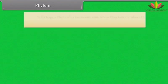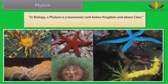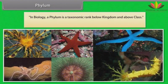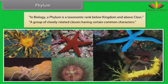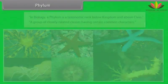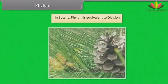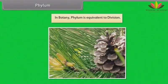Phylum: In biology, a phylum is a taxonomic rank below kingdom and above class. It is a group of closely related classes having certain common characters. In botany, phylum is equivalent to division.